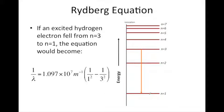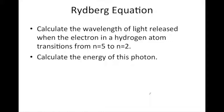So let's practice a problem using the Rydberg equation. Calculate the wavelength of light released when an electron in the hydrogen atom falls from n equals 5 to the second shell, n equals 2.